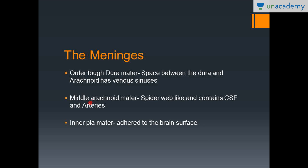The second meninx is the arachnoid mater, and the third is the pia mater. The dura mater is the toughest of the three meninges. The arachnoid mater, as the name suggests, is a spider web-like layer. The pia mater is firmly adherent to the brain surface — you cannot separate it from the brain surface.